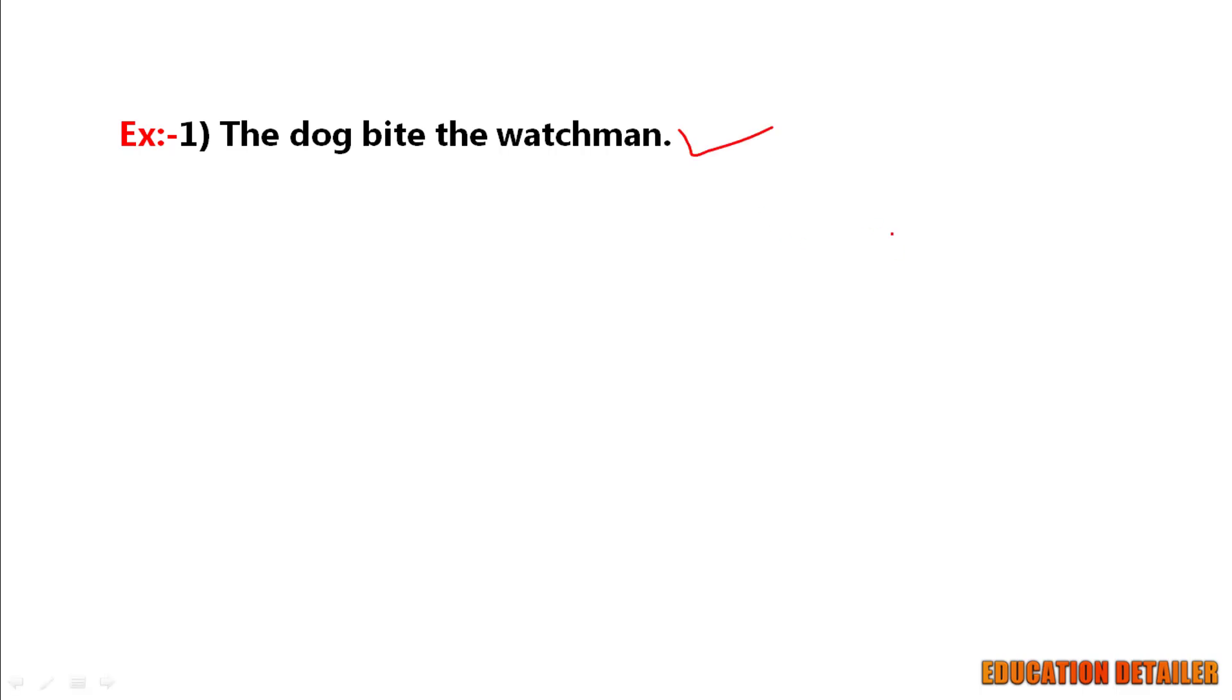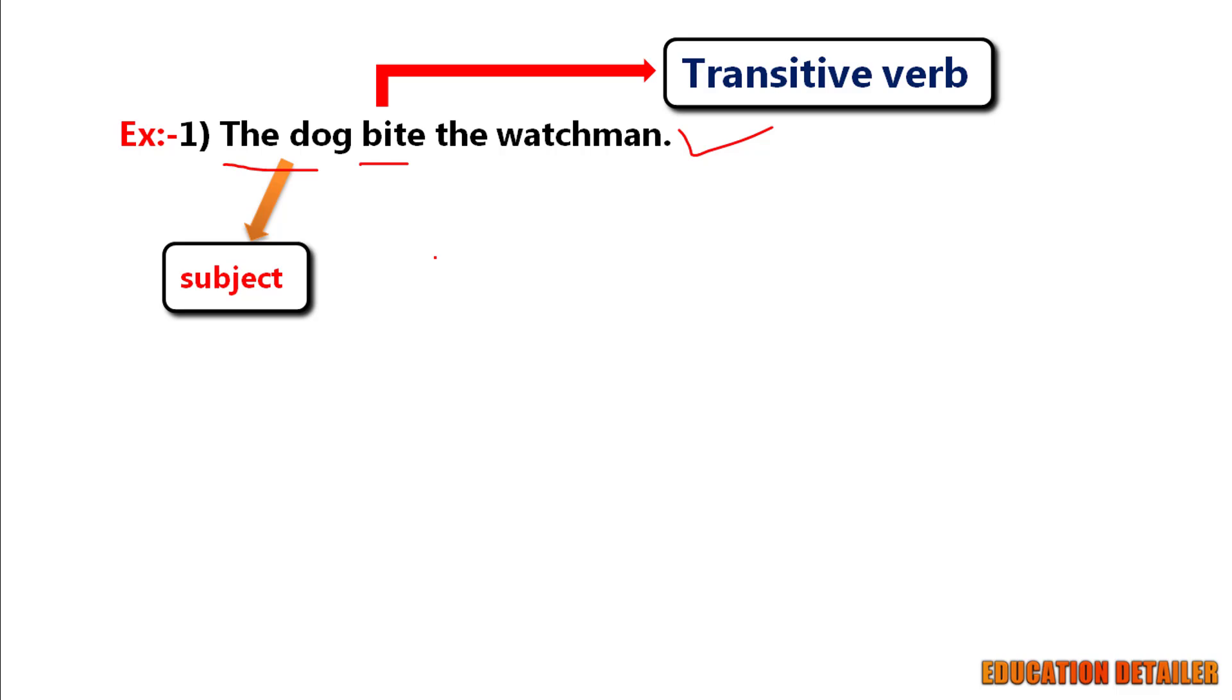The dog bite the watchman. Here the dog is a subject and bite is a transitive verb. Because when you ask a question, the dog bite whom, you will get the answer: the watchman.